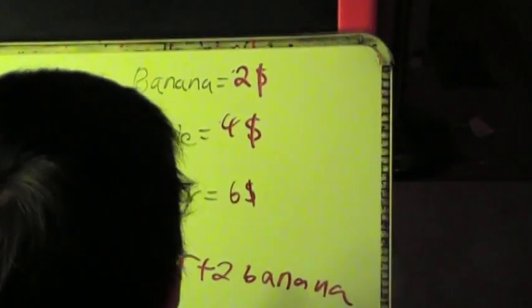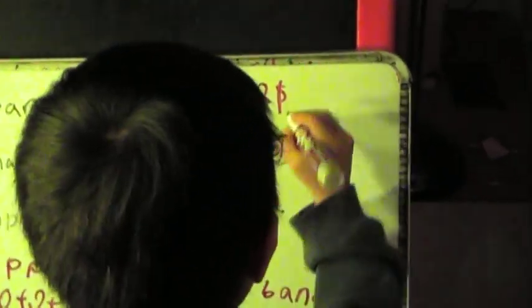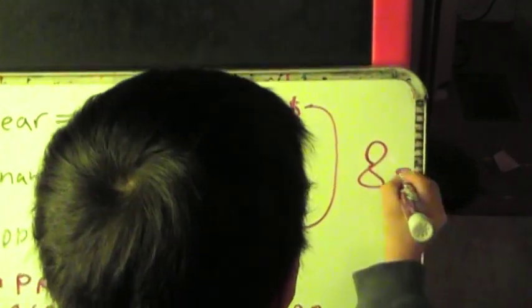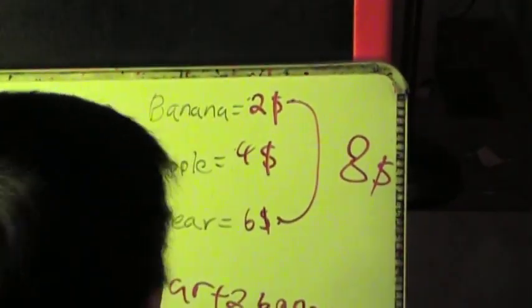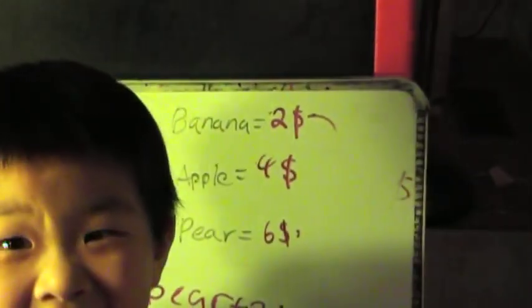A pear plus banana. Here's a banana. Actually, it equals eight dollars. Yay! You got the second one correct. I got the second one correct. Good job.